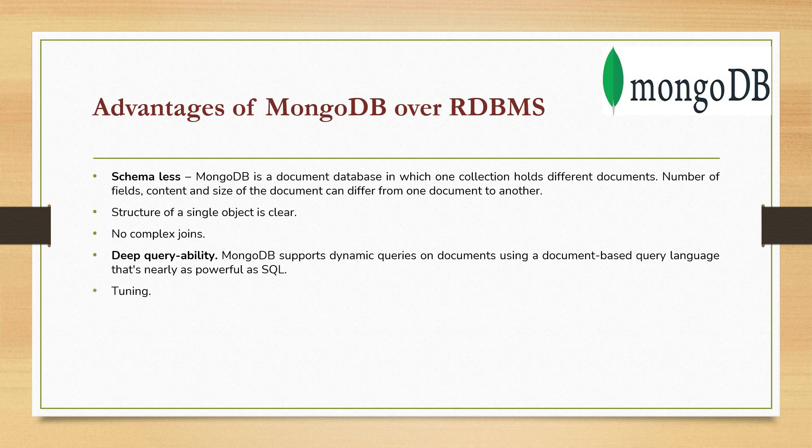When we talk about tuning — in SQL databases you can create indexes and do various things to improve your application's performance. Similarly in MongoDB, you can easily tune by creating indexes on one field or many fields. And if you want to fetch only certain attributes from each document, that is also possible, which is another way to perform tuning.